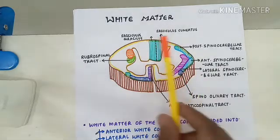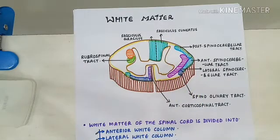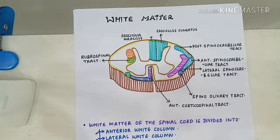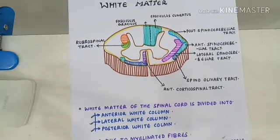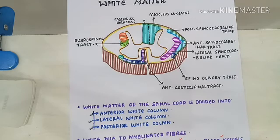The white matter of the spinal cord is divided into three types: the anterior white column, the lateral white column, and the posterior white column. So three types of columns are present in the white matter — anterior, lateral, and posterior white column.